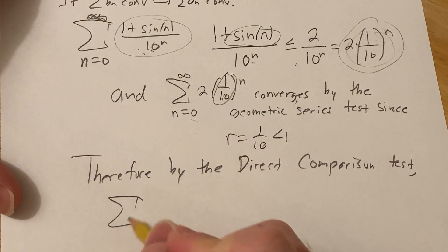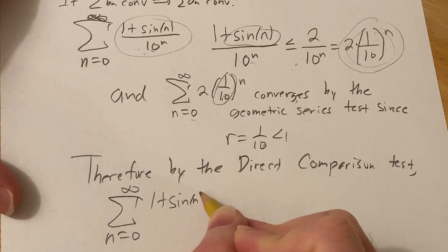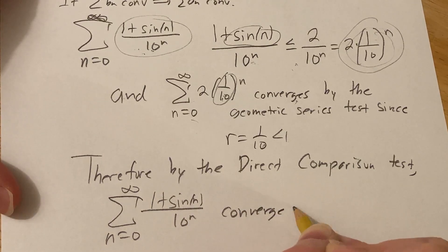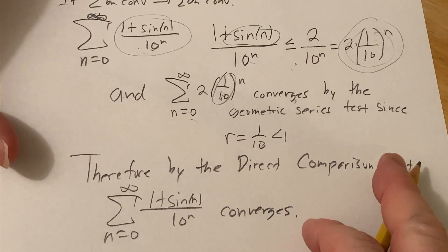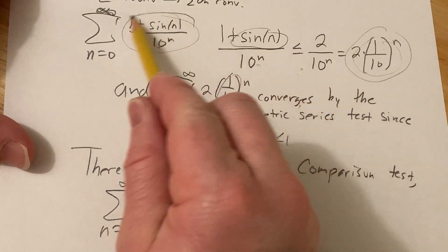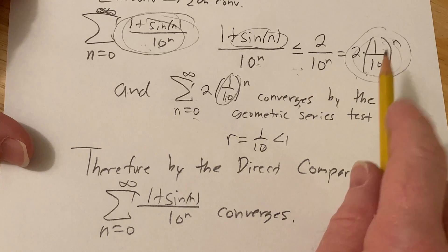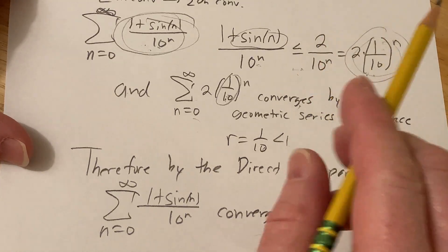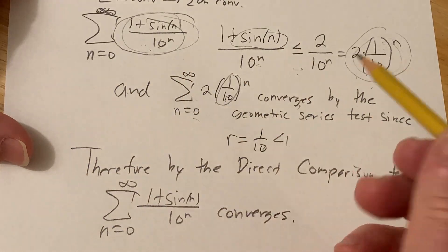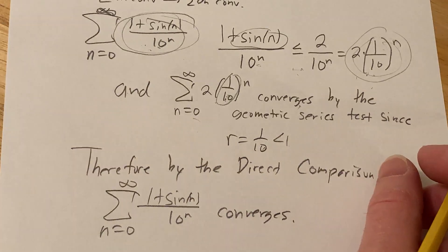Therefore, by the direct comparison test, the infinite series — the sum from 0 to infinity of (1 + sin(n)) / 10^n — converges. The main point is: when showing convergence using the direct comparison test, you show your terms are less than or equal to the terms of a convergent series. Here we used a geometric series, but sometimes you can use a p-series or something else.